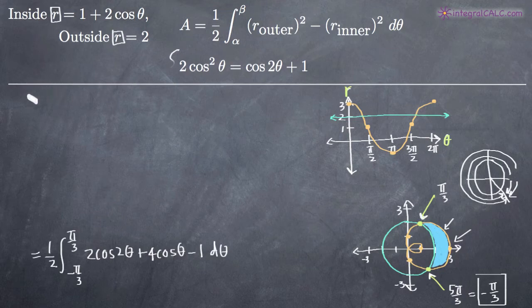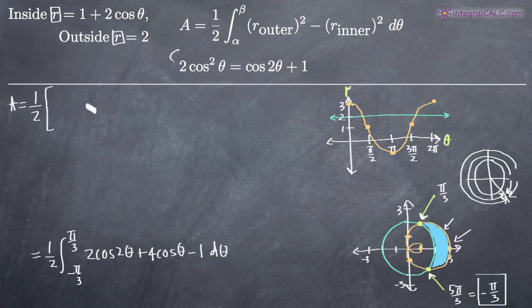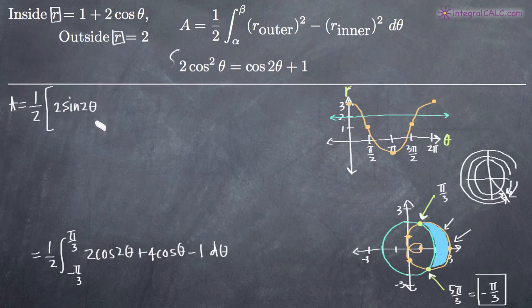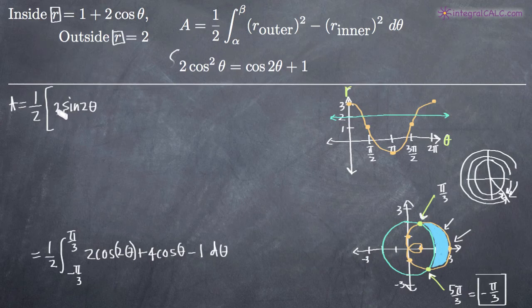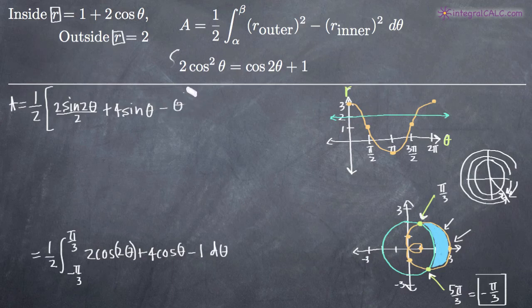Taking the integral, area equals one half times the integrated expression. The integral of 2 cos of 2 theta is 2 sin of 2 theta divided by 2, because by the chain rule we divide by the derivative of 2 theta, which is 2. Then we have plus 4 sin of theta, which is the integral of 4 cosine theta, and minus theta. We evaluate this on the range negative pi over 3 to positive pi over 3.